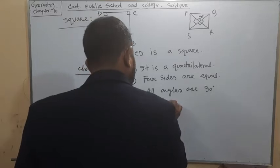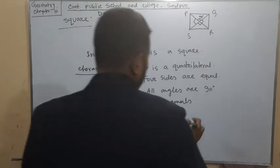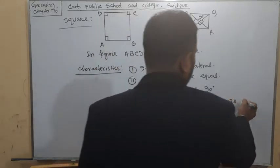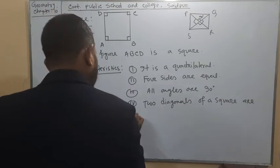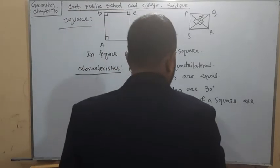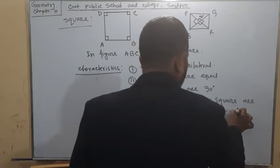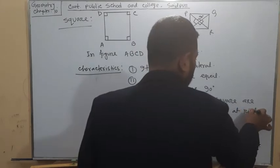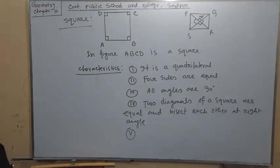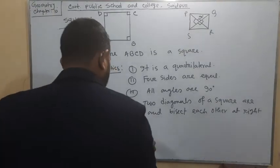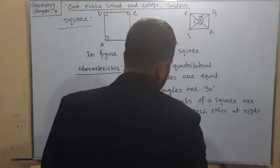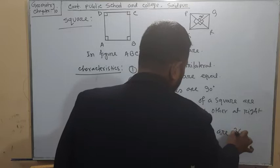Two diagonals of a square are equal and bisect each other at a right angle. We can also write: the sum of the four angles is 360 degrees.